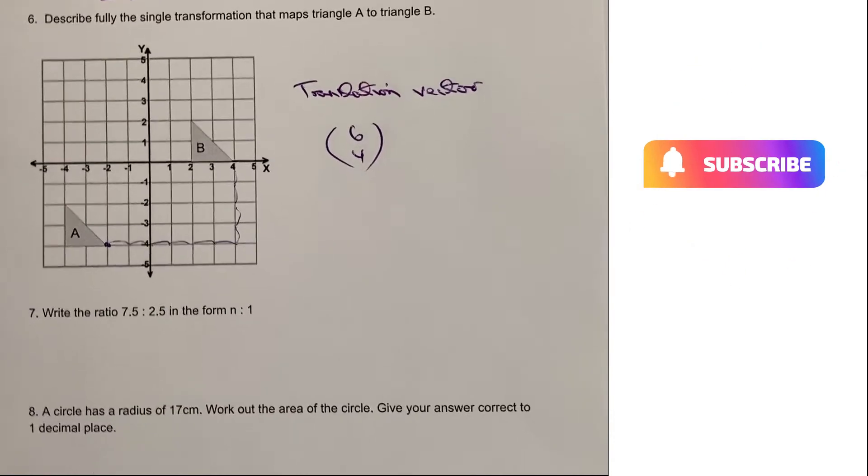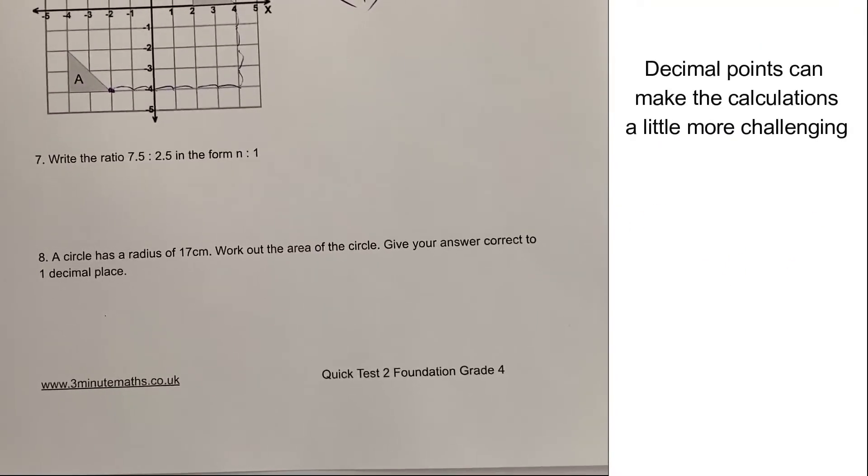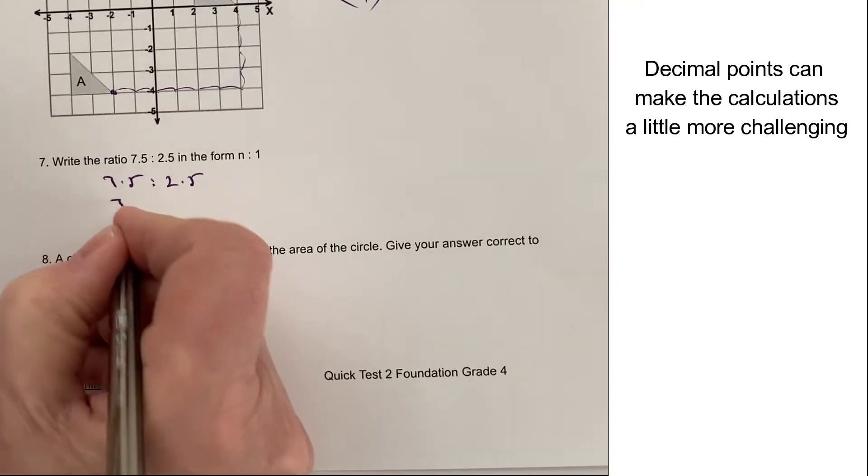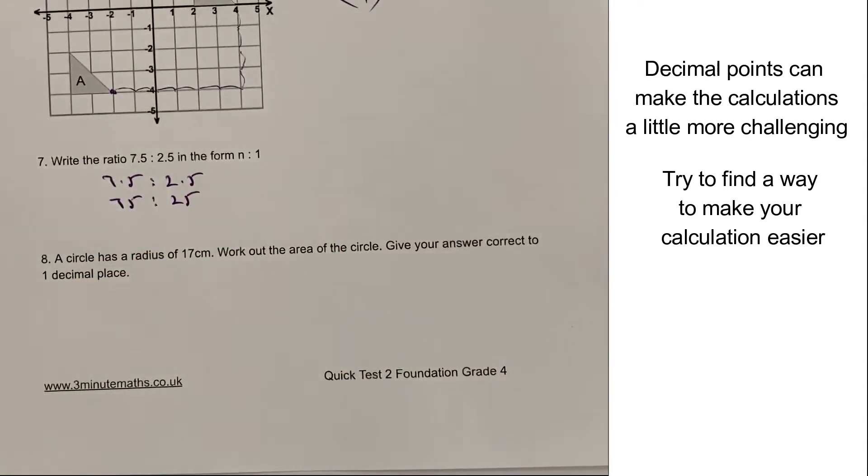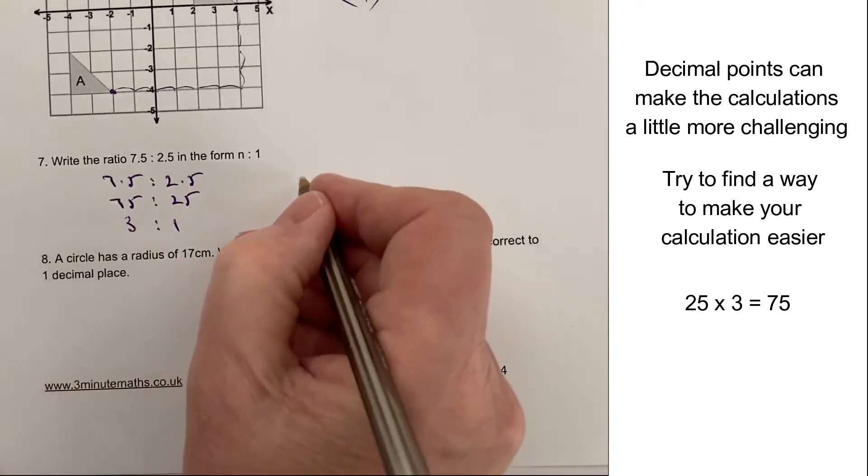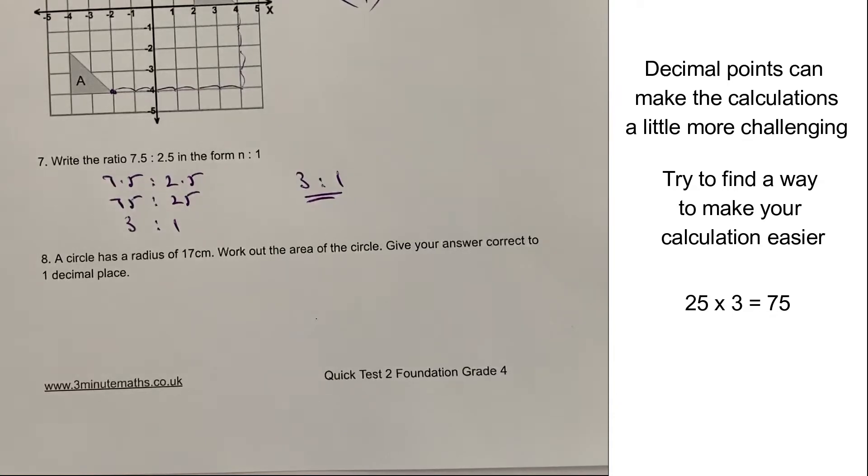Let's move on then to question number seven. Question number seven is one of those questions where it can be a little bit tricky when you first look at it, because it's actually 7.5 to 2.5 as a ratio. So if I put that like that, but I actually just make it 75 to 25. So in other words, it's exactly the same ratio, but I've just made each side 10 times bigger. And then hopefully you can see that actually I can reduce that to 3 to 1, because 25 will go into 75 three times.